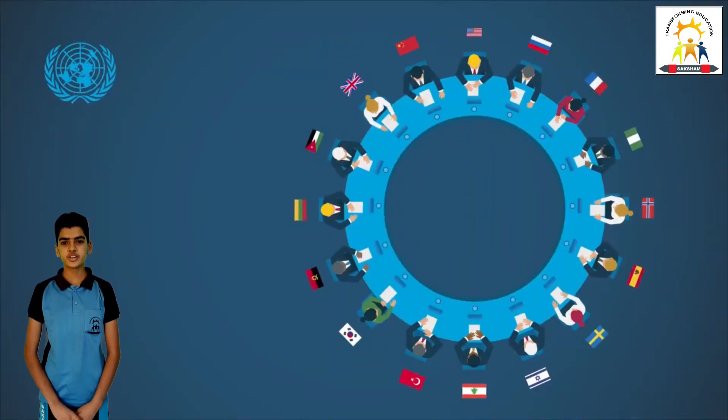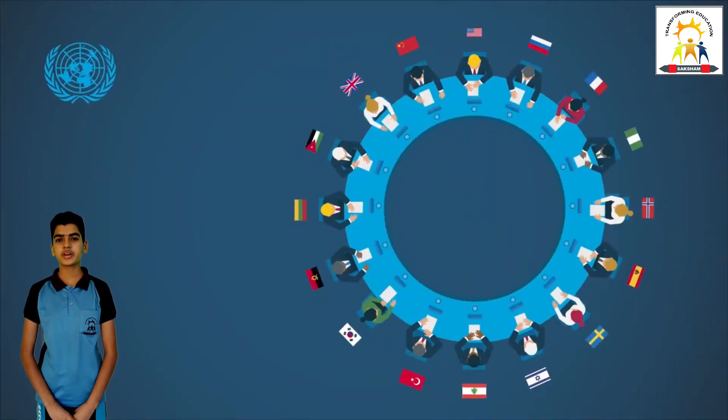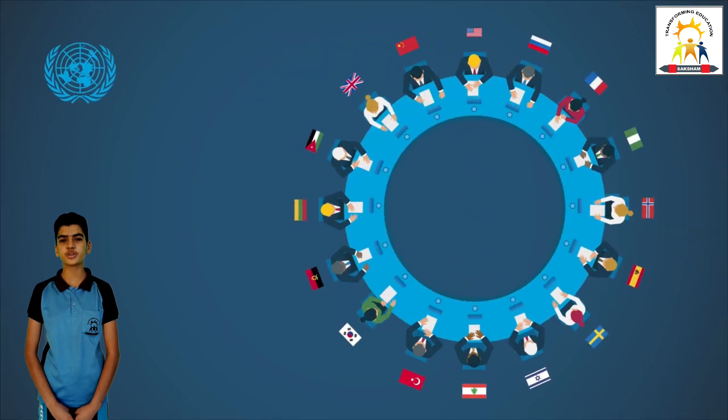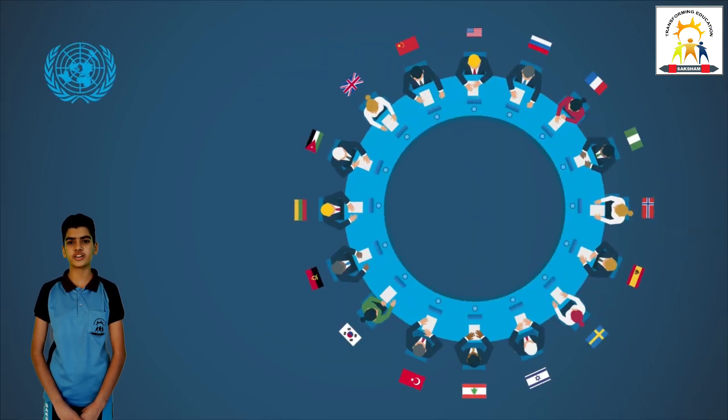The International Court of Justice is situated in The Hague in the Netherlands. 15 judges are elected to the International Court of Justice for a period of 9 years.